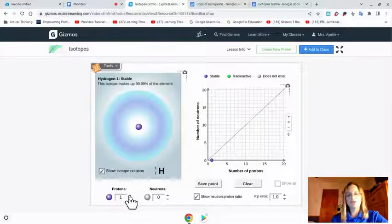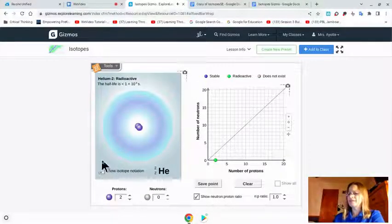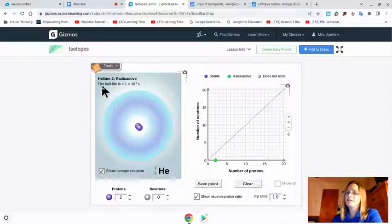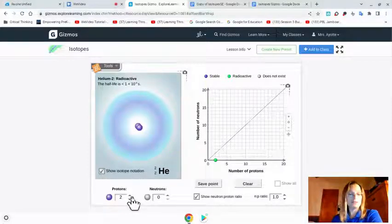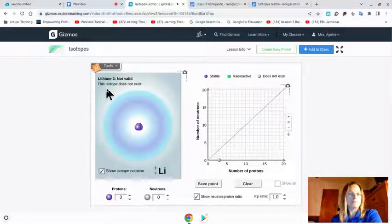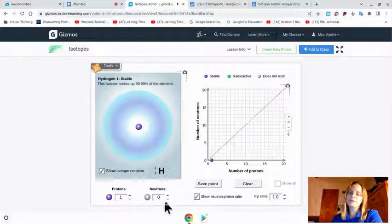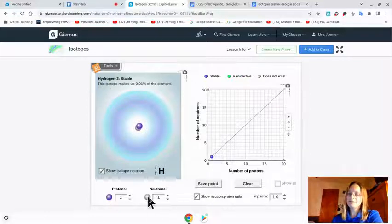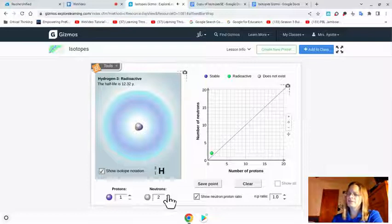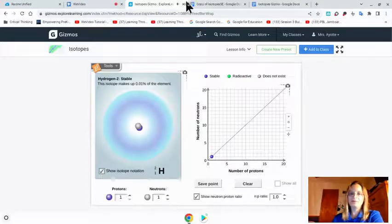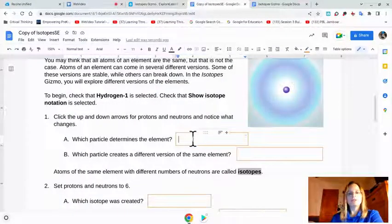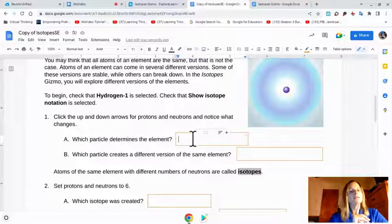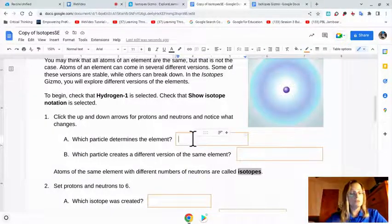So first we'll do the protons. I'm going to change it from 1 to 2. Now look at this, it just changed from hydrogen to helium. Let's do that again. It changed to lithium. Interesting. So let's move that back down to 1 because we want hydrogen. So which particle determines the element? Well, when we change the protons, we change the element. So that's the one that determines it. Protons.